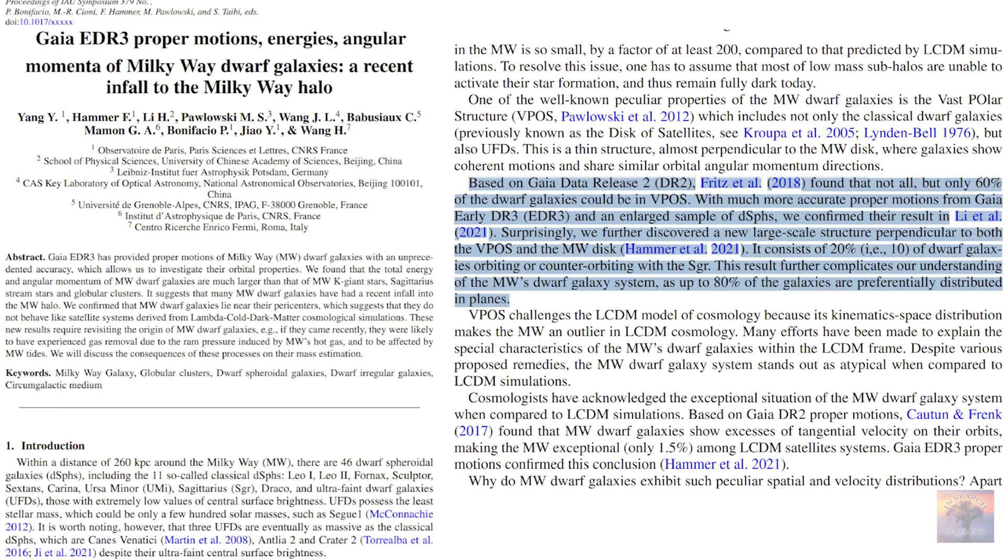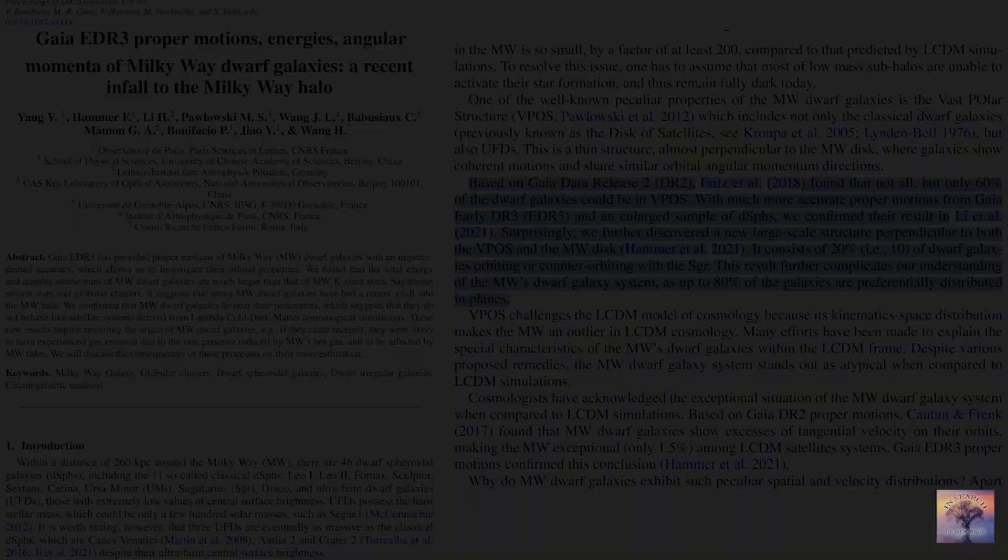The third release of data from the Gaia telescope has completely puzzled researchers. It turned out that of the total number of satellite galaxies, 60% are included in the above-described disk structure. But the surprise was that of the remaining 40% of the satellites, half form another flat structure which is perpendicular to both the first structure and the disk of the galaxy.